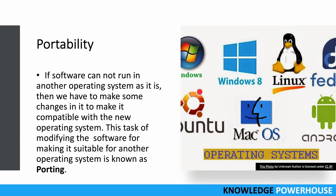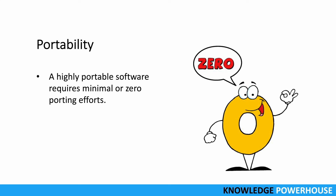If your software cannot run on another operating system as-is, you have to make changes to make it compatible. Like in the Oracle database server example, you need to modify the software to make it suitable for running on another operating system — this task is called porting. When we have highly portable software, there are minimal or zero porting efforts required.